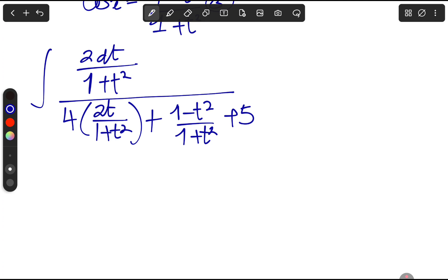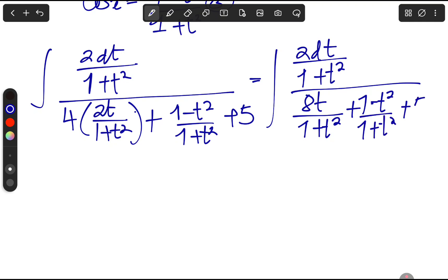We can simplify this to - we have 2dt over 1 plus t squared over, this we can multiply to give us 8t over 1 plus t squared plus 1 minus t squared over 1 plus t squared plus 5. We are moving slowly by slowly.